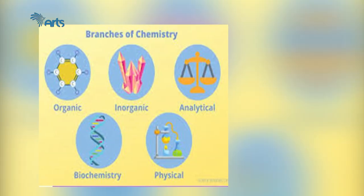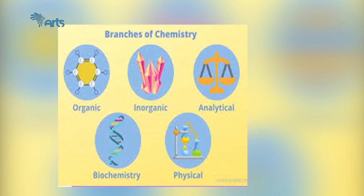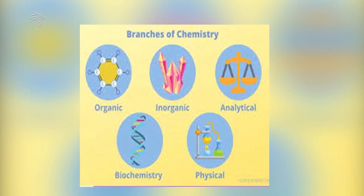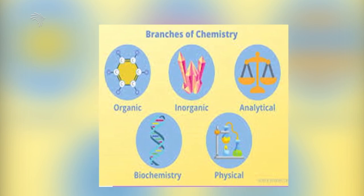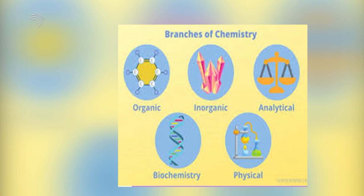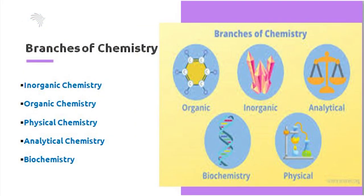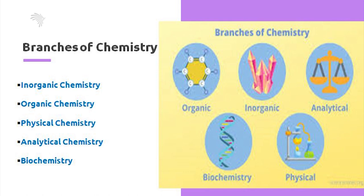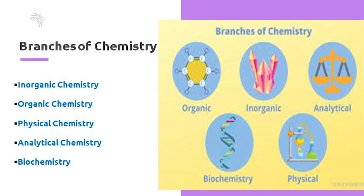Now let's move on to branches of chemistry. As an independent natural science discipline, chemistry is further divided into different branches — just as biology is divided into other branches. Here we will focus on some of the well-known branches of chemistry. The first is inorganic chemistry, which is the study of all the elements and their compounds, with the exception of carbon and its compounds.